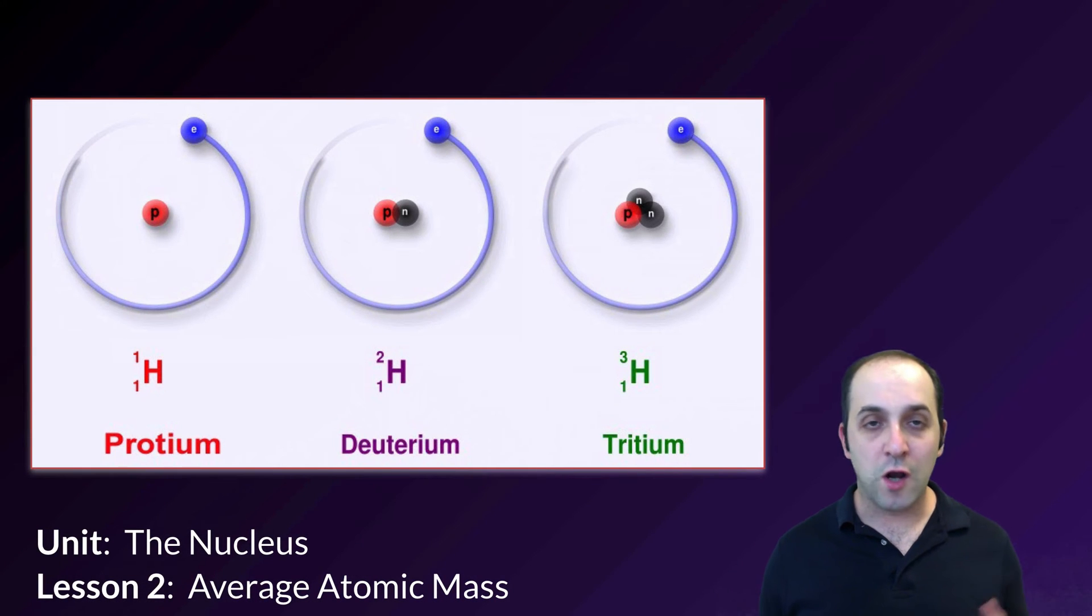Hi and welcome to lesson 2 in our Nucleus Unit. Here we're going to talk about average atomic mass and why, when we look at the periodic table, a good number of the atomic masses written on them are written as decimals.